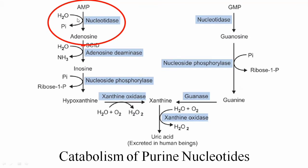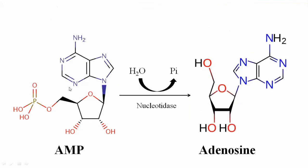In the first reaction for the synthesis of uric acid from adenine monophosphate, AMP is converted into adenosine. Adenosine monophosphate is essentially adenosine with one phosphate attached. In AMP, there is the adenine nucleotide base, the ribose sugar, and the phosphate. Without the phosphate it is adenosine; with one phosphate it is monophosphate; with three phosphates it would be adenine triphosphate.